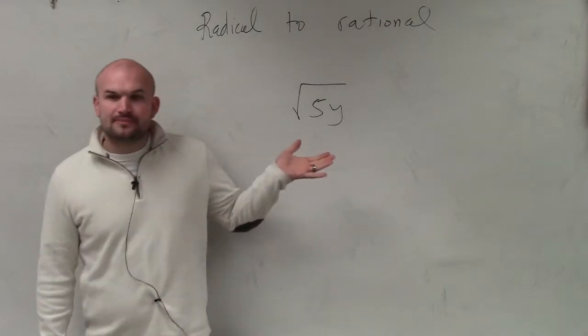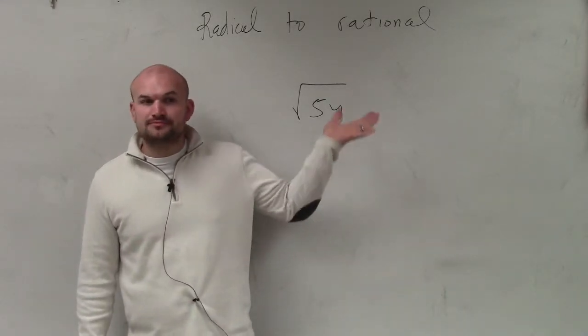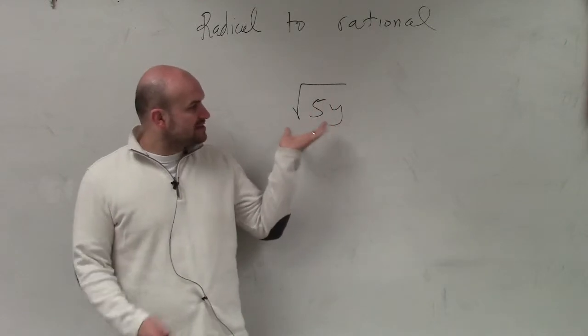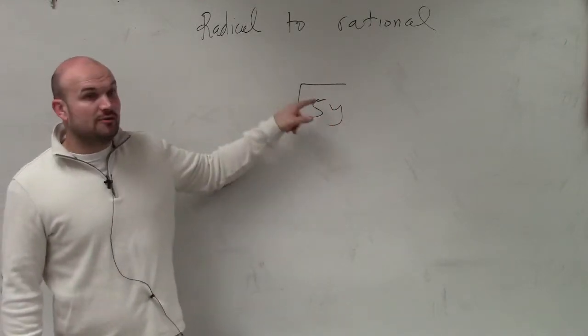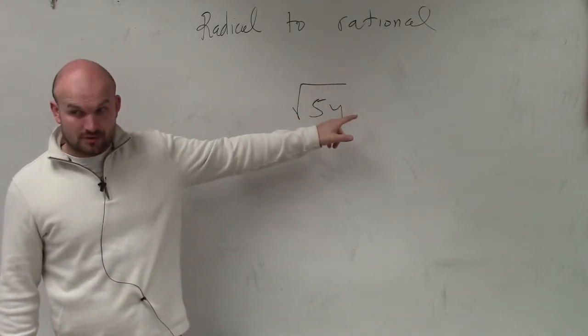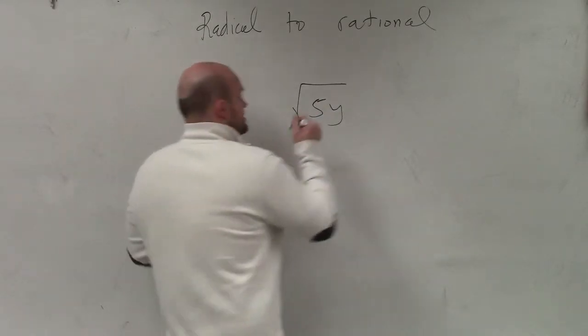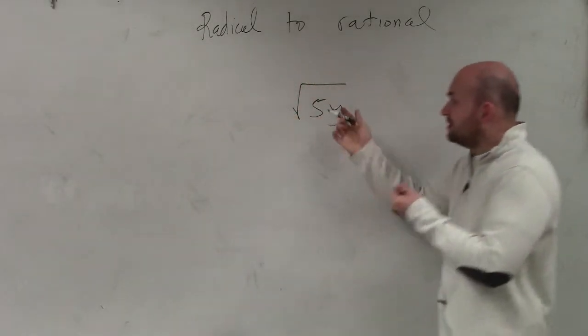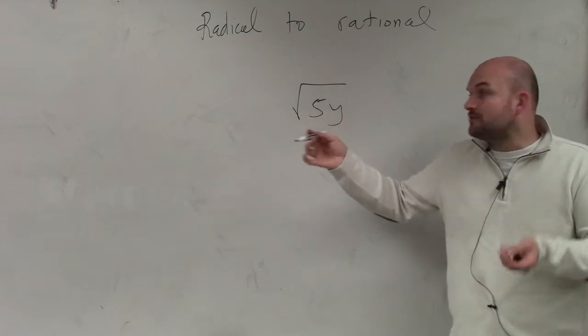As you remember, the power to product rule works when we distribute. But basically what I want you to understand is I'm taking the square root of 5 and y. So I'm taking the square root of 5 and I'm taking the square root of y.